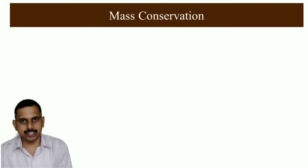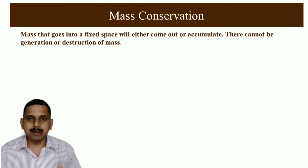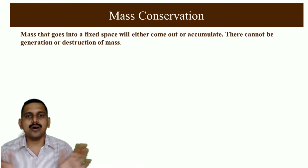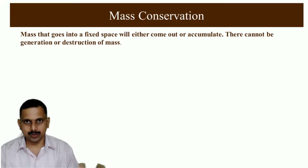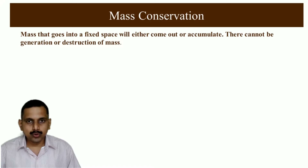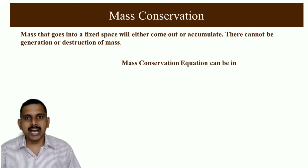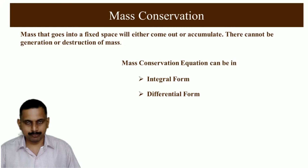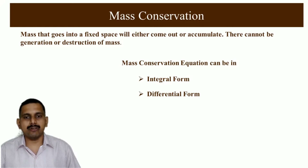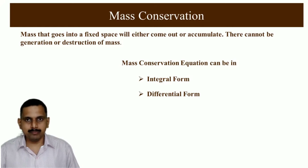We will also understand the difference between a control mass and a control volume. First, let us understand what is mass conservation. Mass conservation means whatever is coming in has to go out or either accumulate — mass cannot be destroyed nor created. This is the basis of the mass conservation equation. There are two forms: integral form and differential form.